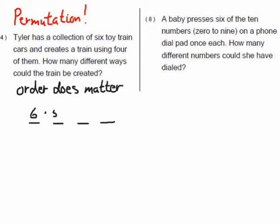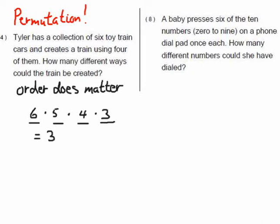Let's just do the fundamental counting principle. He's got six different cars and he wants to hook them up in some type of train — how many different ways could the train be created? So there'd be six choices, then five choices for the next car, then four, then three. That ends up being 360 — you can do those almost in your head if you know your times tables.